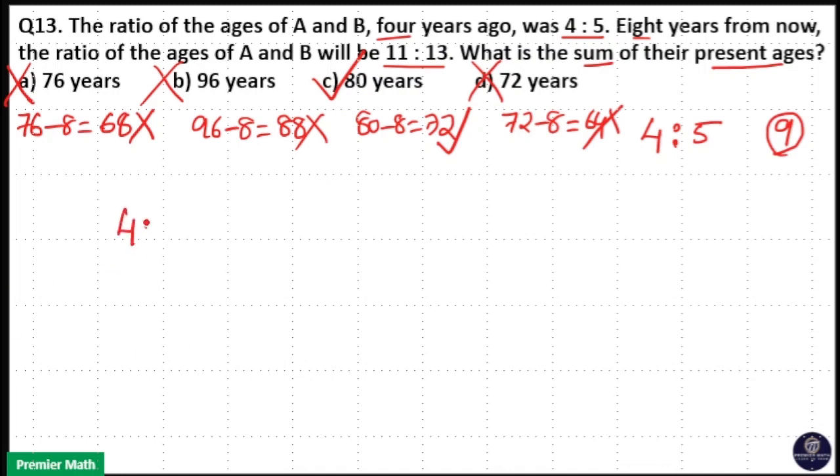If you want to find the answer using the normal method: four years ago, the ratio of ages of A and B was 4 is to 5. After 8 years, the ratio is 11 is to 13.